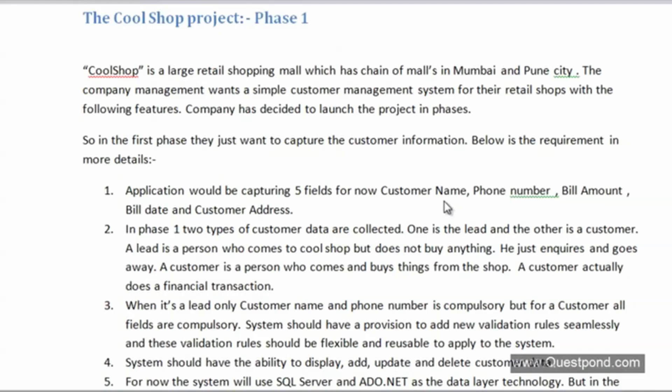Let us discuss the project. This is an extremely simple project, and to make learning easy I've divided it into various phases. In phase one, we have just six to seven requirements. We'll concentrate on those and try to architect the system and see what design patterns come up. The Cool Shop project is a small software for a company — a large retail shopping mall with chain malls in Mumbai and Pune — that wants a simple customer management system.